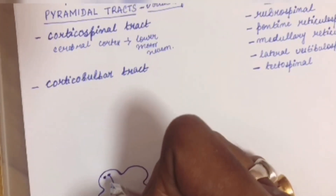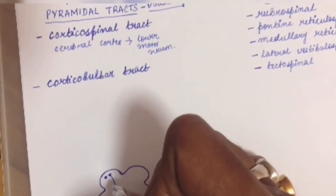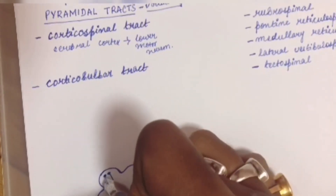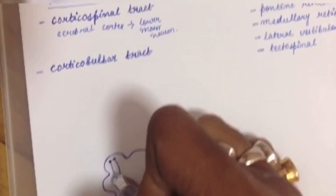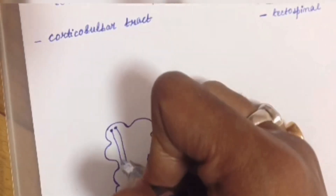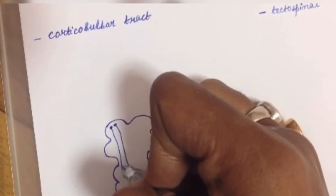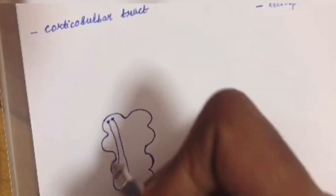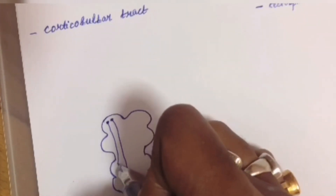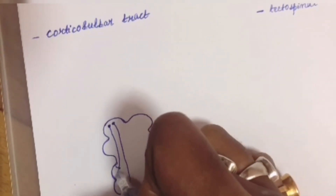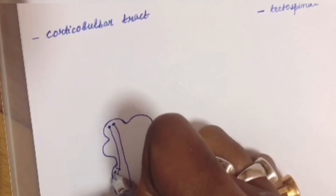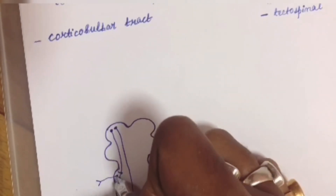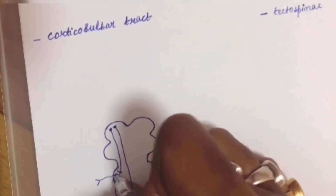The corticobulbar tract starts from the cerebral cortex and connects with the motor nucleus of the cranial nerve. So it starts from the cerebral cortex and ends at the motor nucleus of the cranial nerve.